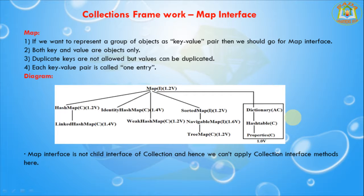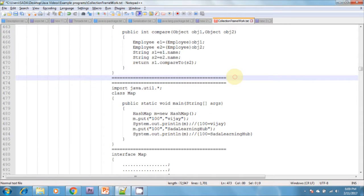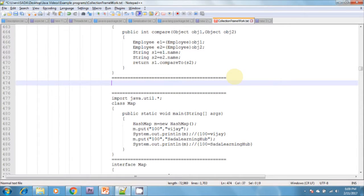If we want to represent a group of objects as a key-value pair, we should use the Map interface. Both keys and values are objects. Duplicate keys are not allowed, but values can be duplicated. Each key-value pair is called one entry. This is how a map looks — in key-value pair format.